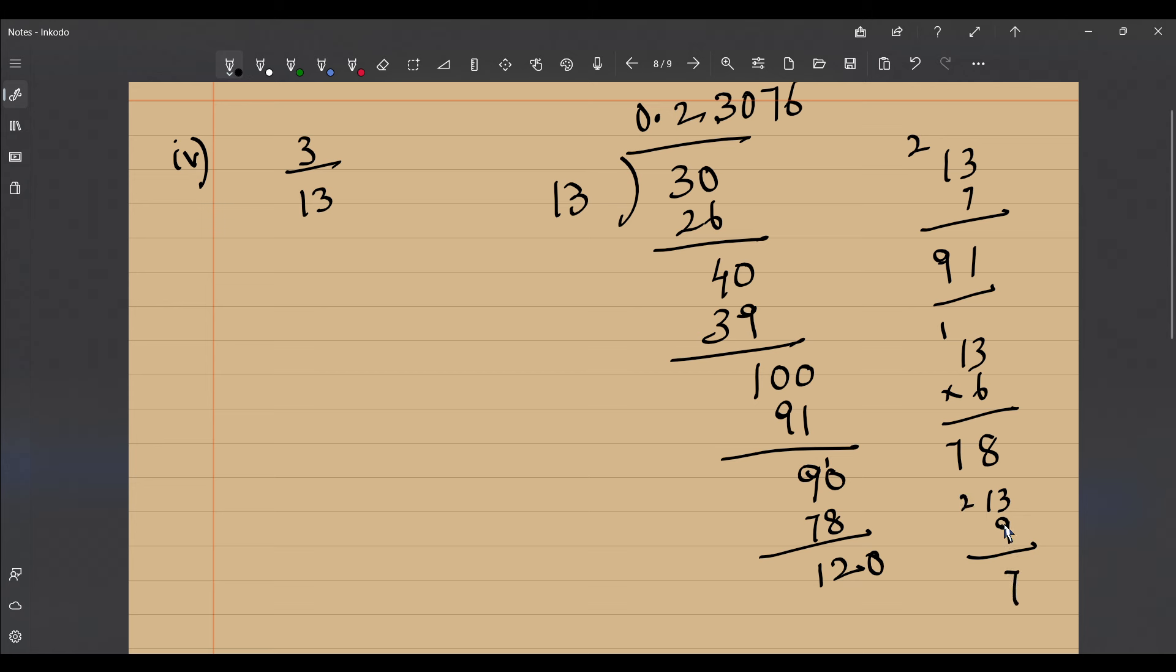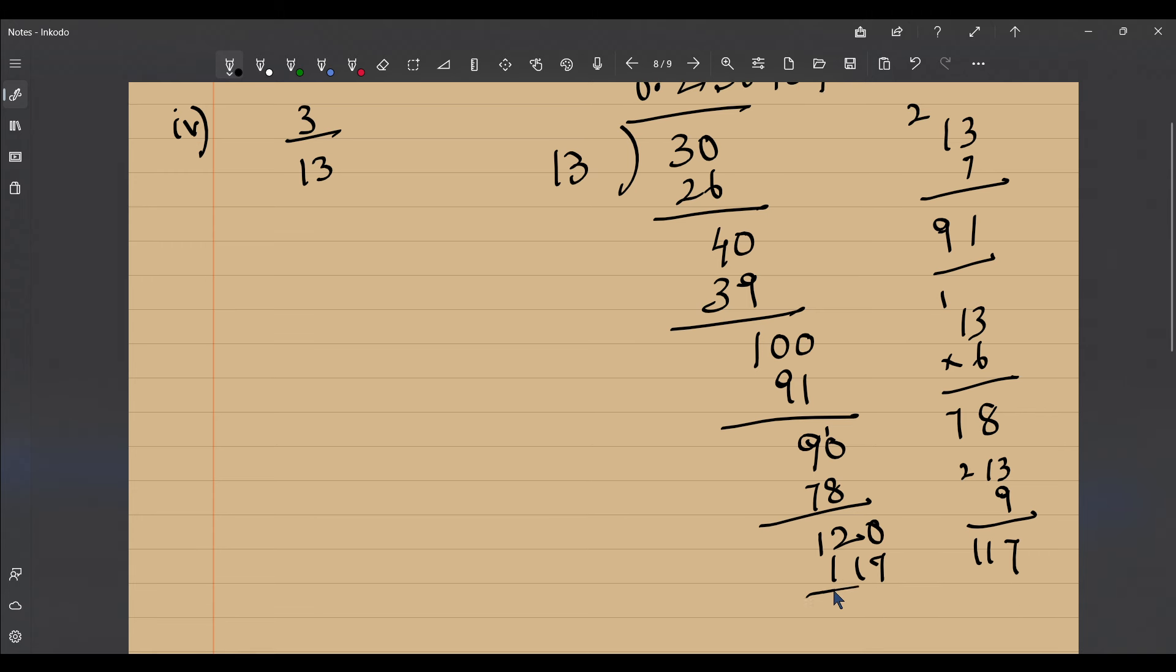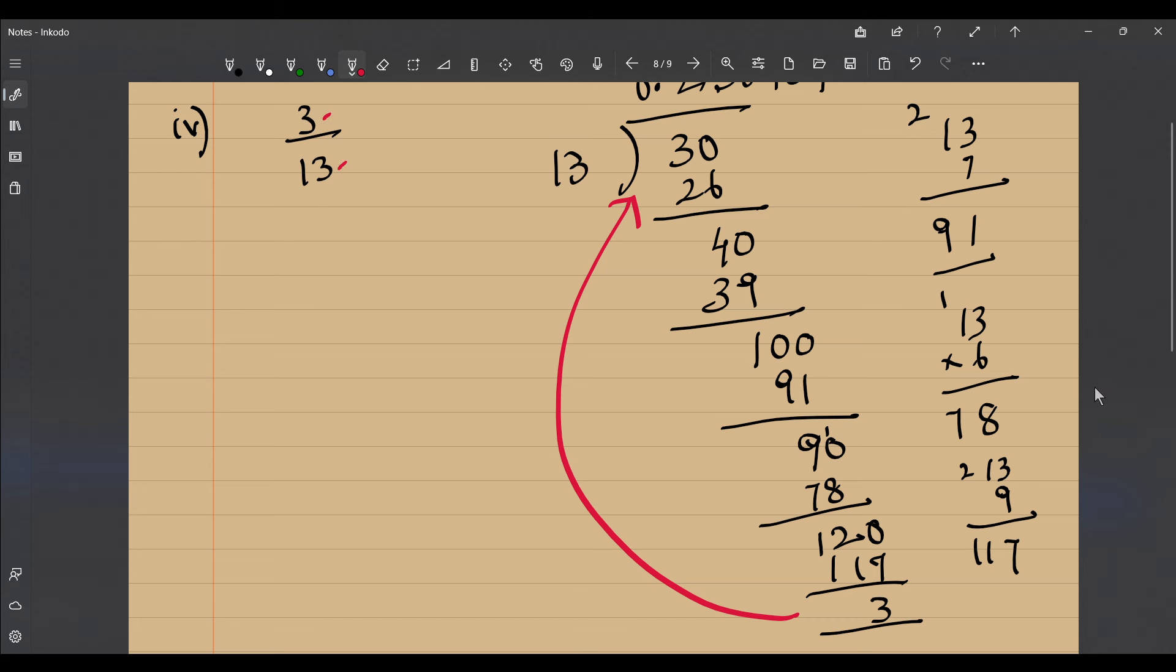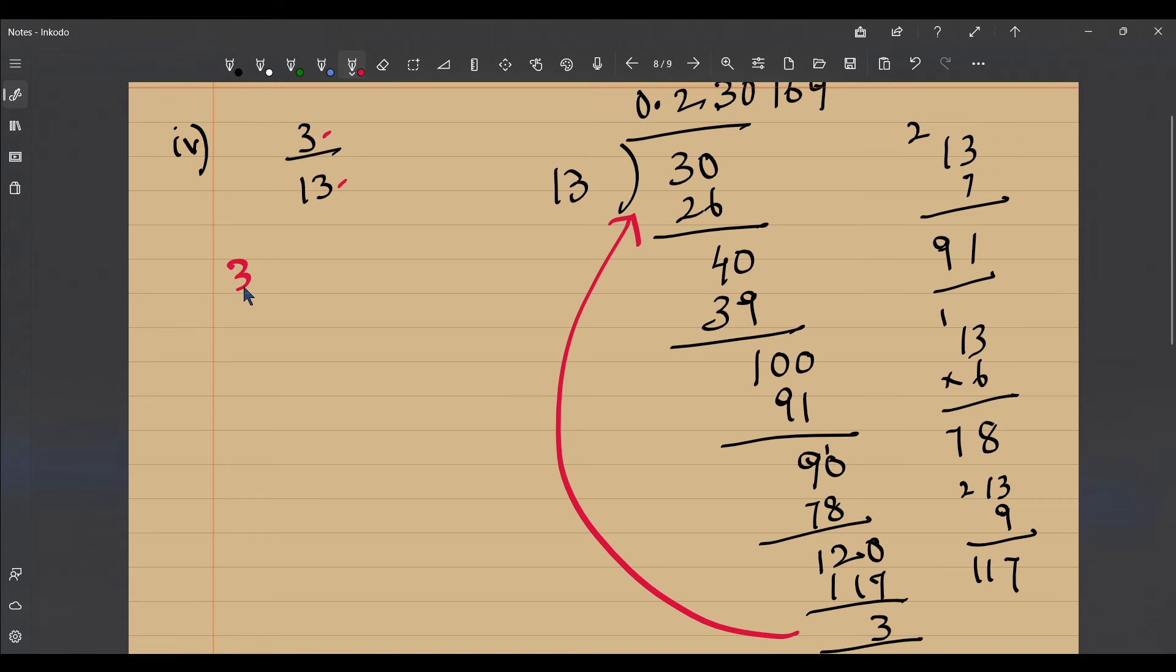I think this is going to terminate, I mean stop here, repeat, start repeating here. Of course it is not going to terminate because the remainder is 3 which is the same as where you began from. You started dividing 3 by 13, so this process is going to repeat again.